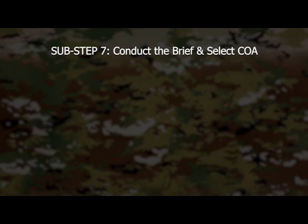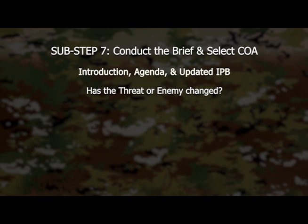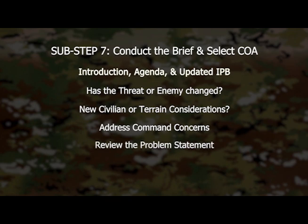Sub-step 7: conduct the brief and select a COA. Always start with an introduction and the intended agenda, with an updated IPB. Has the threat or enemy changed since the last time you briefed your commander? Did new information about civilian or terrain considerations occur?